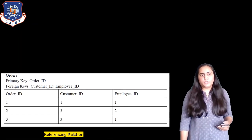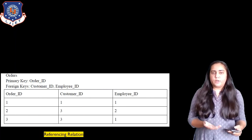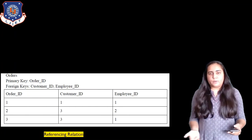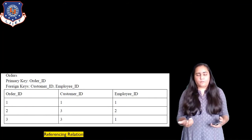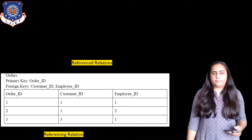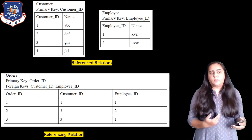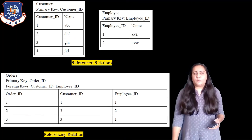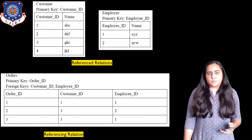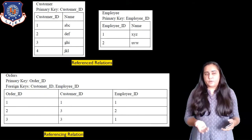For the example, consider an orders relation, which is the referencing relation. It contains the order ID, customer ID, and employee ID — showing which customer placed the order and which employee is fulfilling it. There are two more tables: a customers table storing customer IDs and names, and an employees table storing employee IDs and names. Let's use these three tables to understand primary keys and foreign keys.